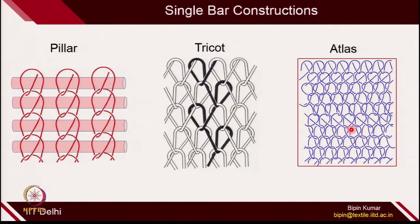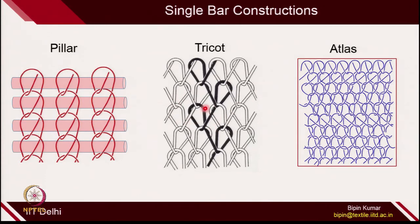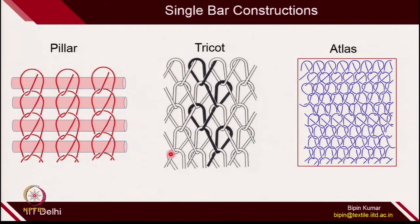All these categories of single bar constructions can also be used in double bar constructions. You can have 2 guide bars — one can be set as a pillar and another as a tricot construction. Once you combine any of these 2, it becomes a double bar construction. We will see examples of how you can combine pillar and tricot to create a composite fabric. You can also combine atlas with pillar, or atlas with tricot — the combinations are infinite. In literature, you can find 5 bar, 6 bar, and 8 bar constructions. Depending on the technology and capability of your machine, you can go for different fabric designs.